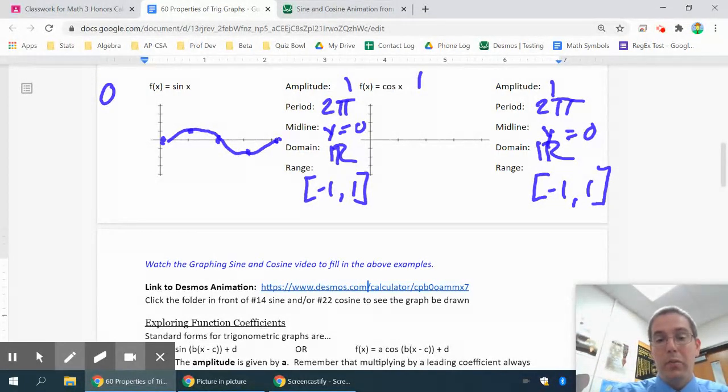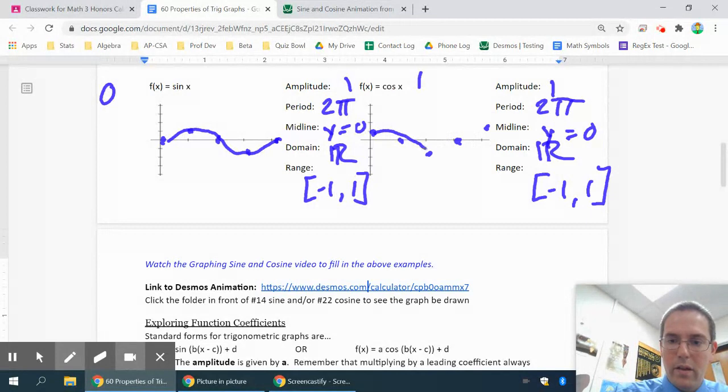The cosine will start at 1, go down to 0, down to negative 1, to 0, and to positive 1.